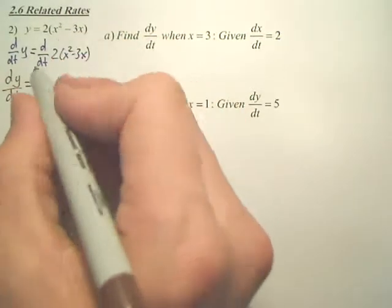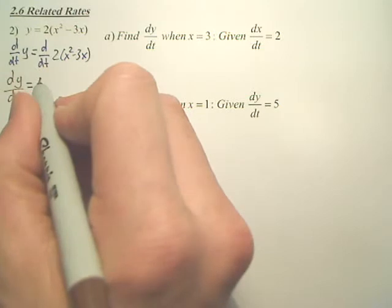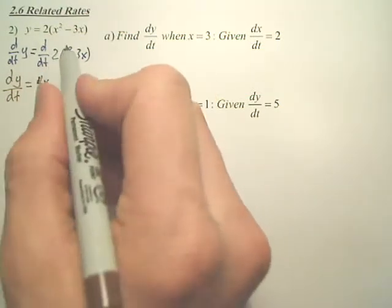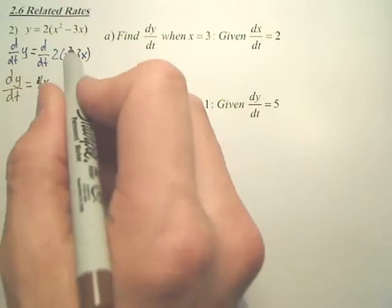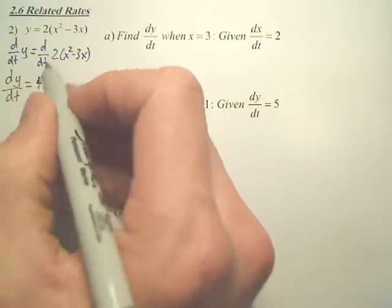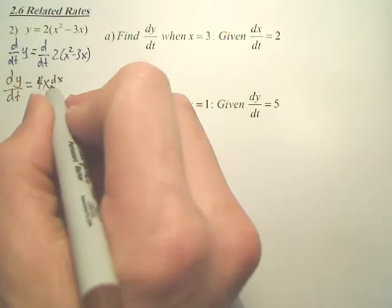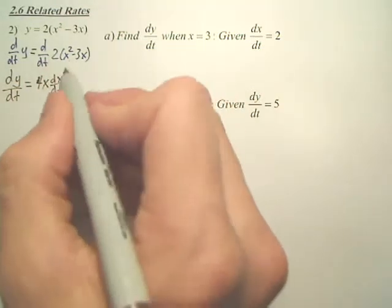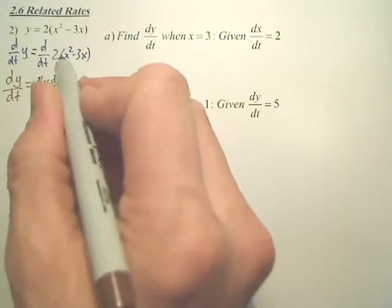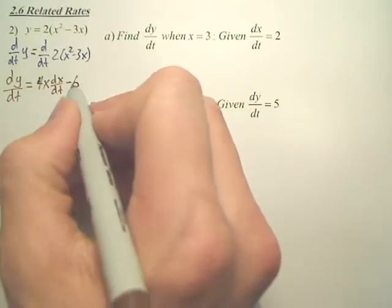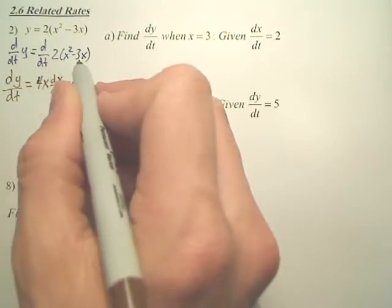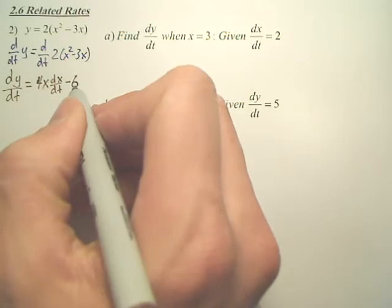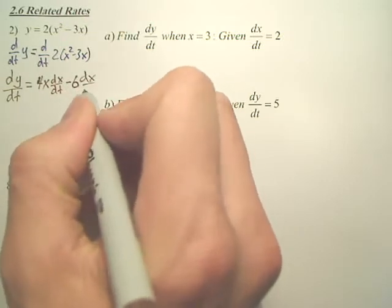This ends up becoming 4x, right? Distribute the 2. 2x times 2 is 4x. And this becomes dx/dt minus 3, because this becomes minus 6, because 2 times negative 3 is negative 6. And negative 6x derived is negative 6 dx/dt.